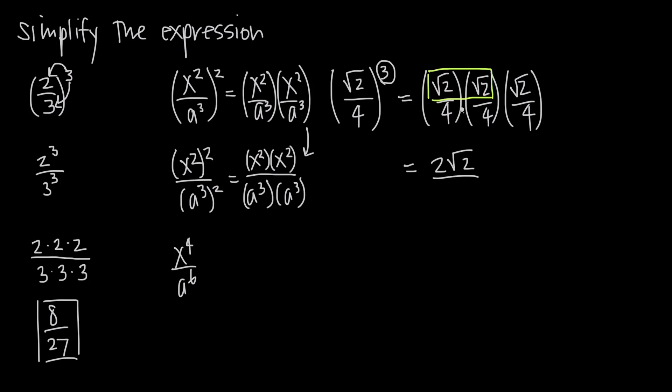And then in our denominator 4 times 4 is 16 times 4 again is 64, so we get 64. And now we can just reduce the fraction by dividing both the numerator and the denominator by 2. So 2 divided by 2 gives us 1, so we just end up with the square root of 2. And in our denominator 64 divided by 2 is going to give us 32. So our final answer becomes root 2 over 32.